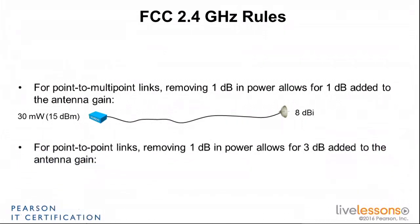There is another rule for point-to-point links. The previous one was for point-to-multipoint, where you have an access point on a building and many other access points around communicating with that hub. For point-to-point links, the rule is different because the FCC considered these would likely be long-range links across mountains and long distances where you might need more power. So instead of the one-to-one rule, point-to-point links use the one-to-three rule: every dB you remove at the transmitter can be compensated by 3 dB of gain at the antenna.